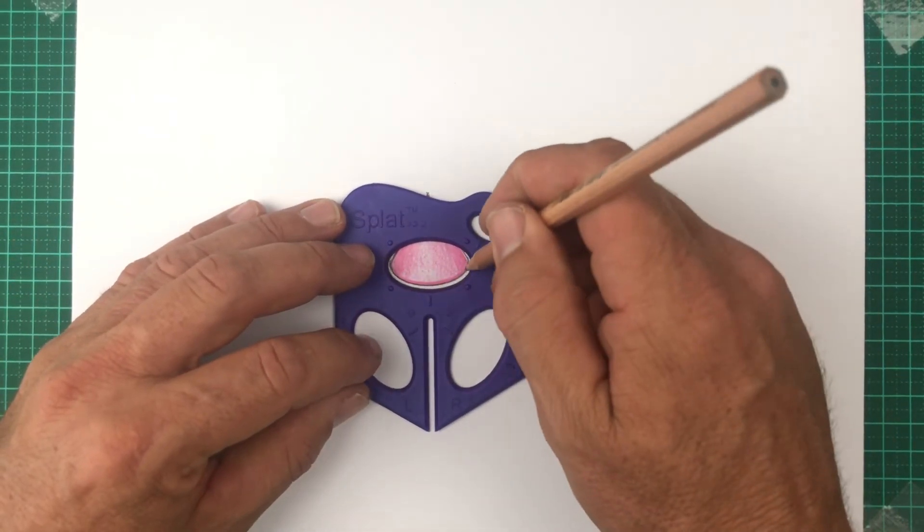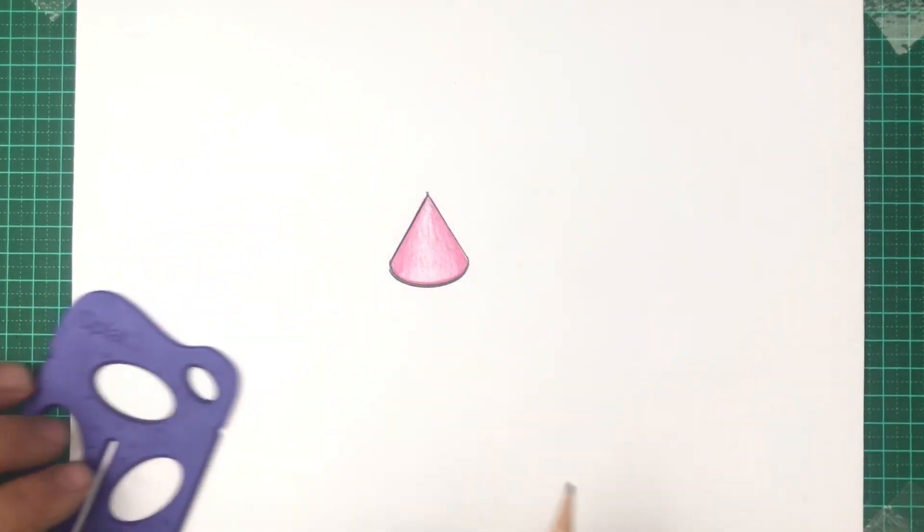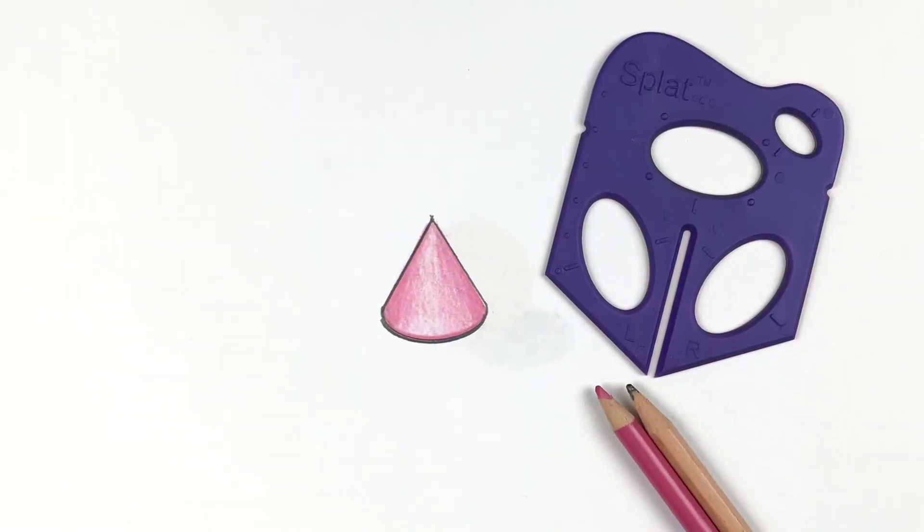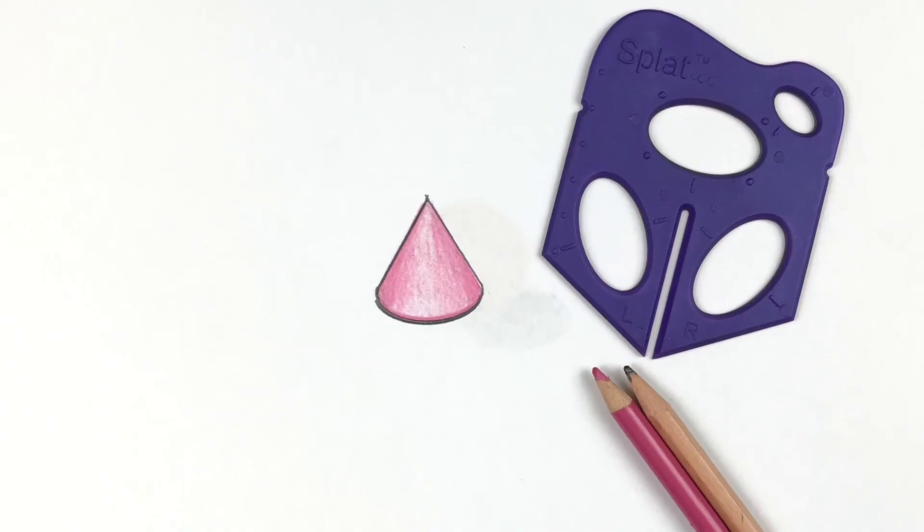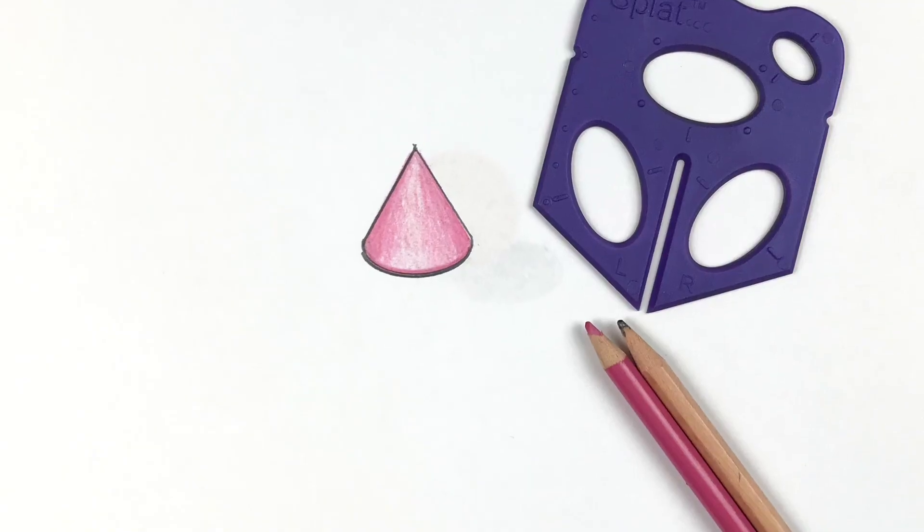Let's add the shadow. Again using the splat to just add a fine little shadow underneath makes it look like it's sitting on the table. Now for practice, I would try drawing a very much taller cone and try drawing one upside down.